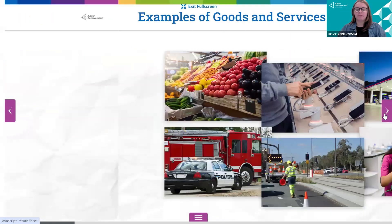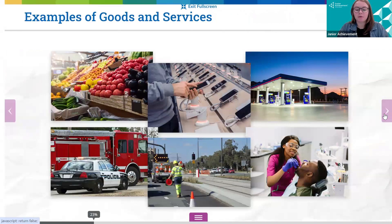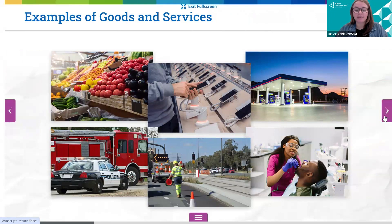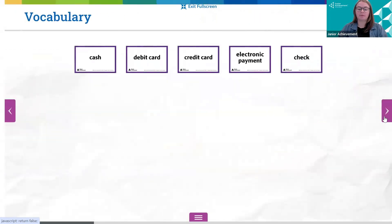From here, you can provide students with several more examples of goods and services. Go through each picture and ask the students to share whether it is an example of a good or a service, and discuss as needed. You could also ask students to brainstorm and share other examples of goods and services that they and their families spend their money on. The next slide has five additional vocabulary words.